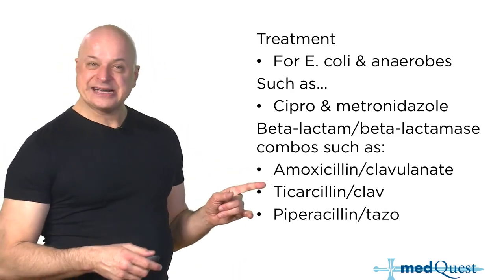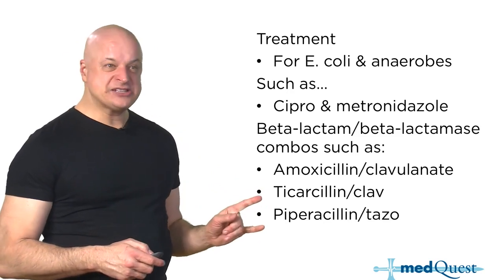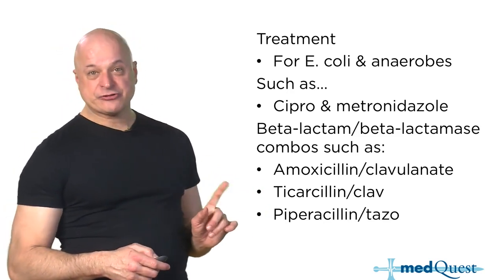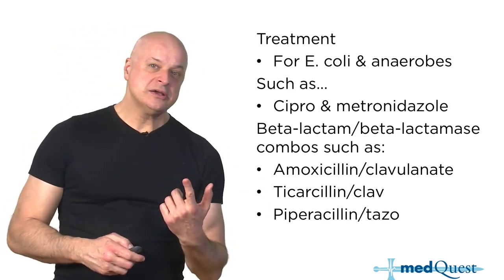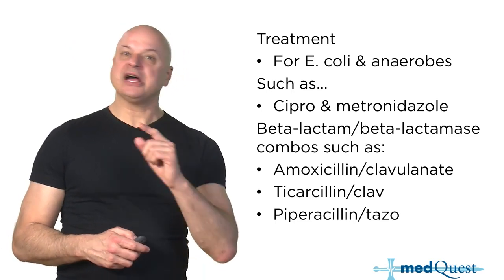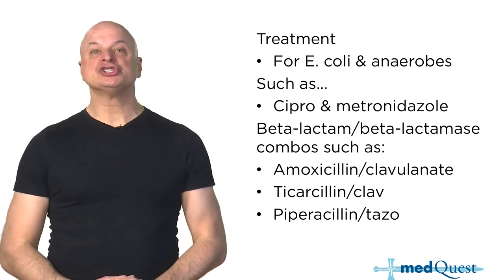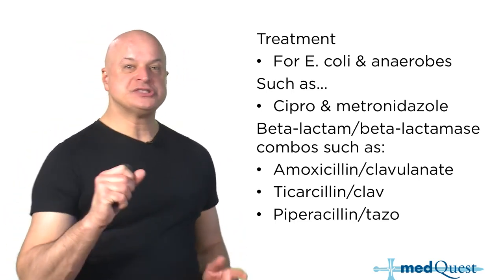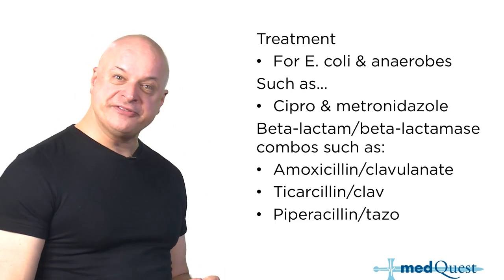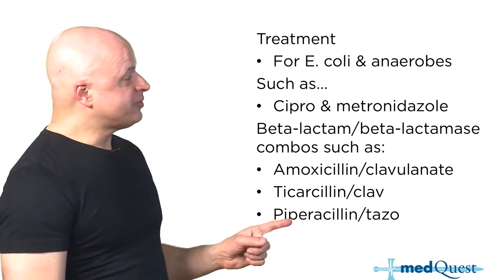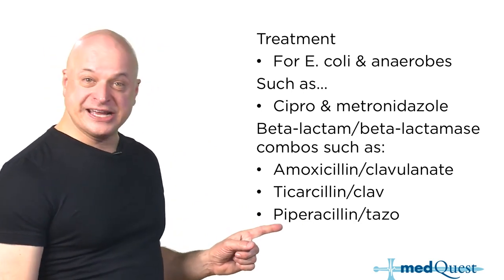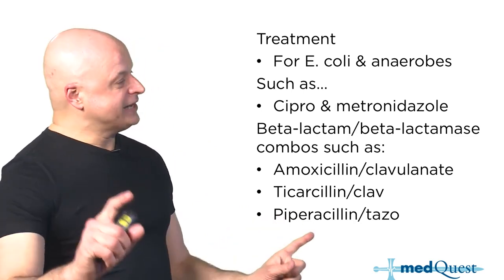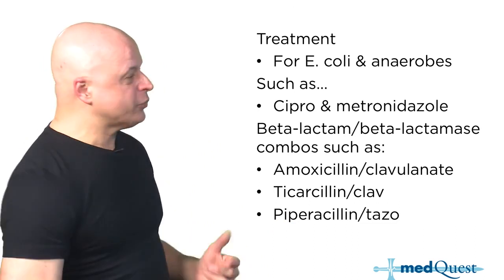Beta-lactam/beta-lactamase combinations all cover anaerobes and E. coli because you don't need to cover pseudomonas in diverticulitis. If this were neutropenic fever, you'd need an anti-pseudomonal drug. But inside the bowel, they're all acceptable.